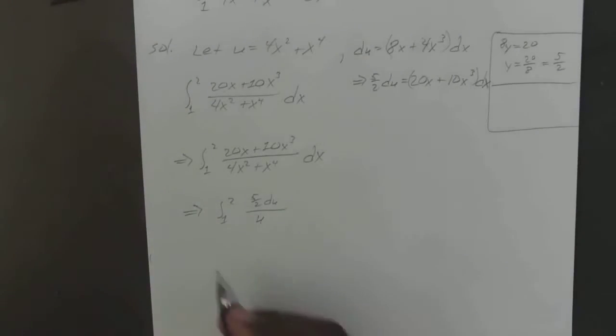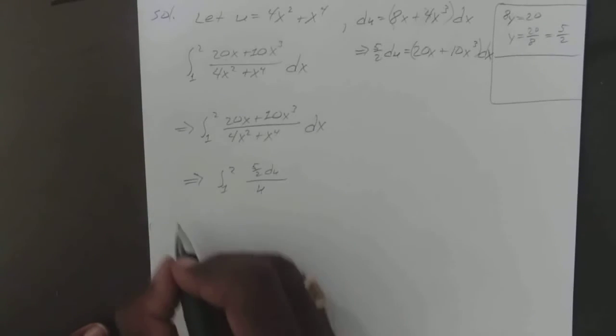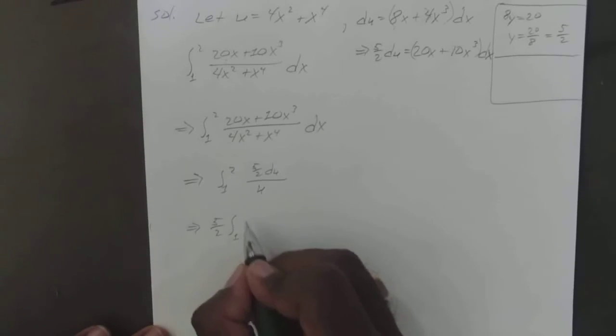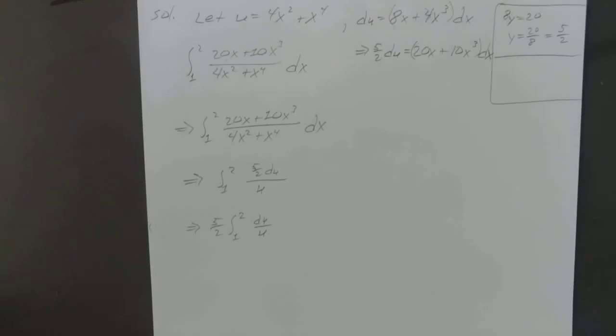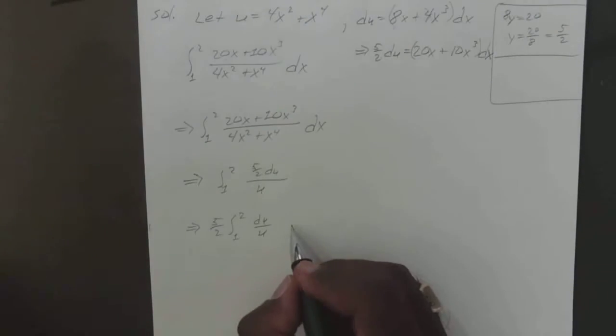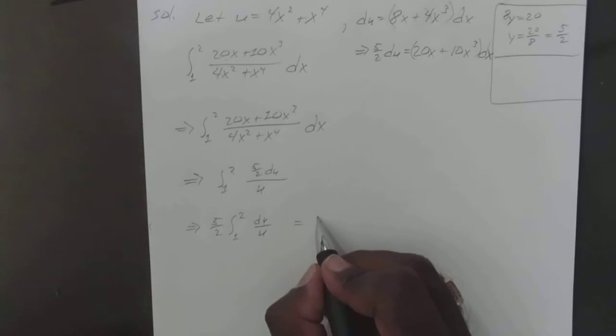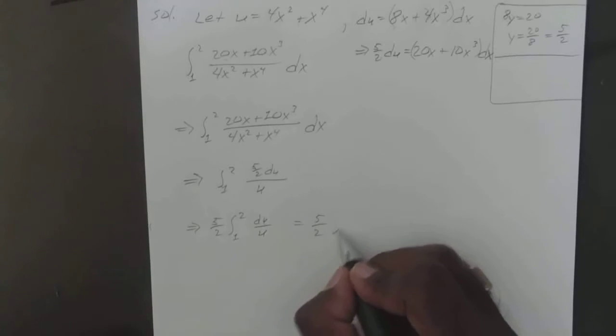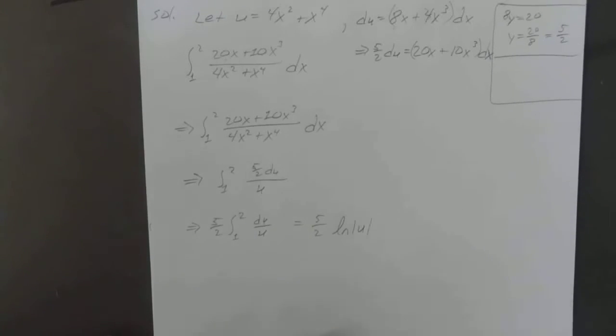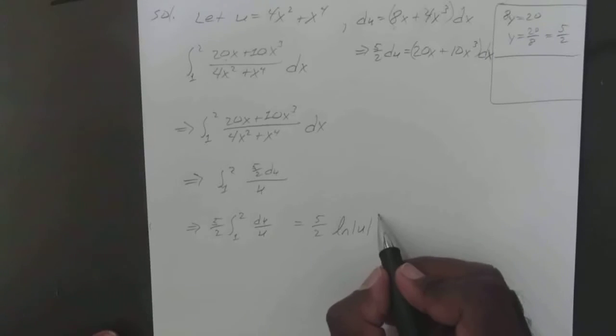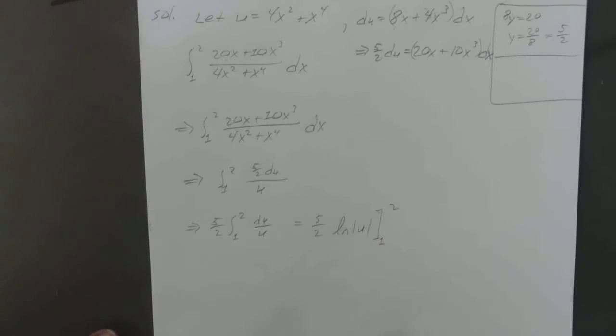So you just go ahead and get that 5 over 2 and bring it to the front. The integral from 1 to 2 of du over u is going to equal 5 over 2 times the natural log of u. We don't need the plus c because we're a definite integral from 1 to 2.